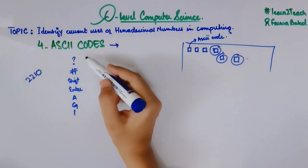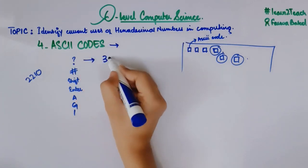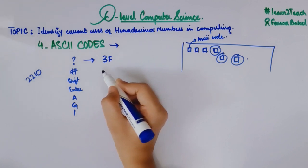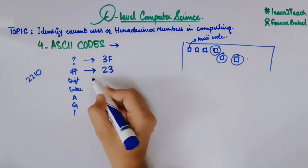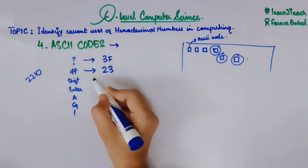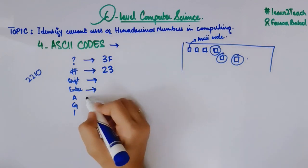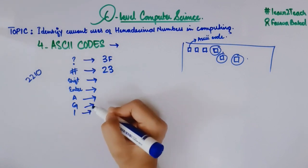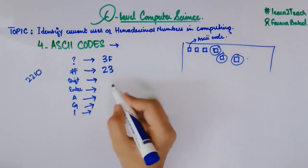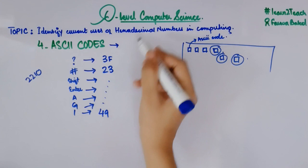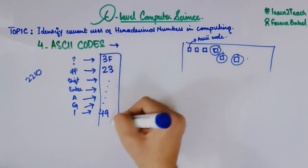For example, a question mark in terms of hexadecimal number is represented as 3F. A hash is represented as 23. A Shift button will have its own particular hexadecimal number. The letter I would be equal to 49 in terms of hexadecimal number. This is the hexadecimal representation of ASCII codes.